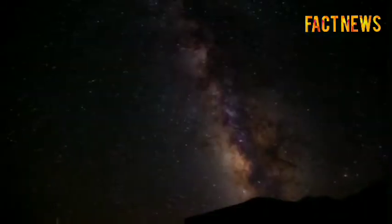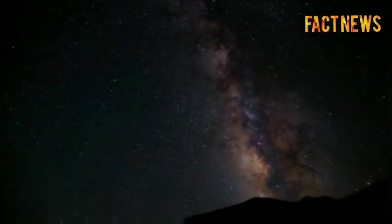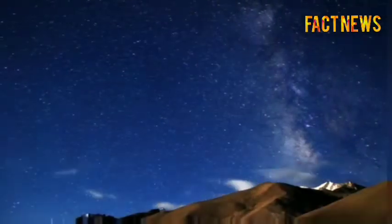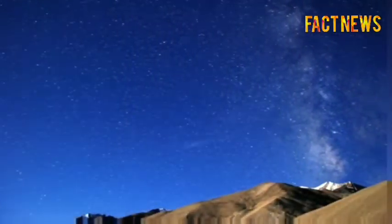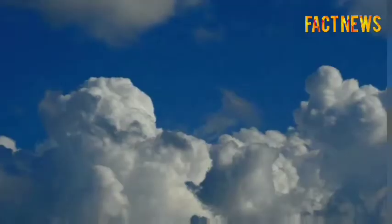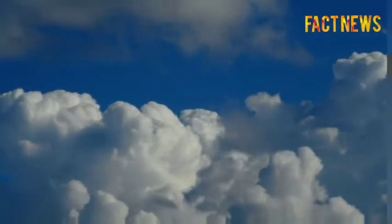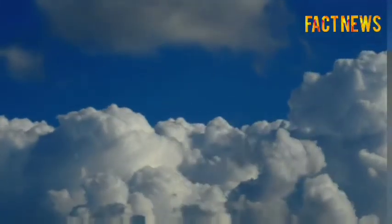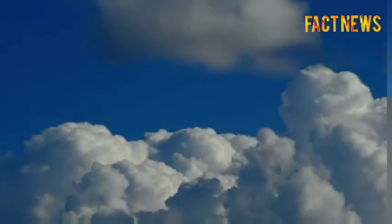Astronomers estimate that there are between 100 and 400 billion stars in the Milky Way, and think that each star has at least one planet. So there are likely hundreds of billions of planets in the Milky Way, and at least 17 billion of those are the size and mass of the Earth.